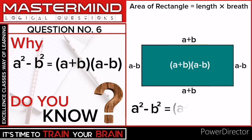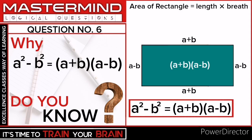So the area of this rectangle is (a+b)(a-b). So here, we get our identity: a² - b² equals (a+b)(a-b).